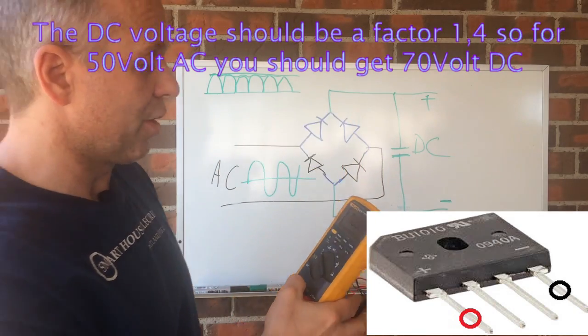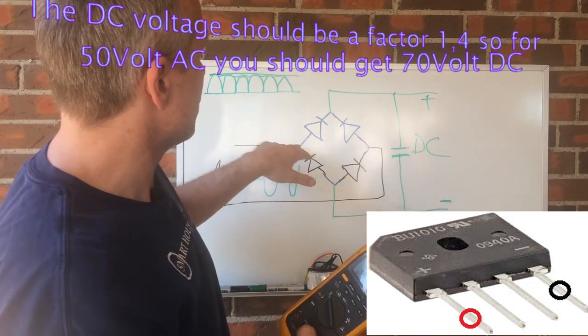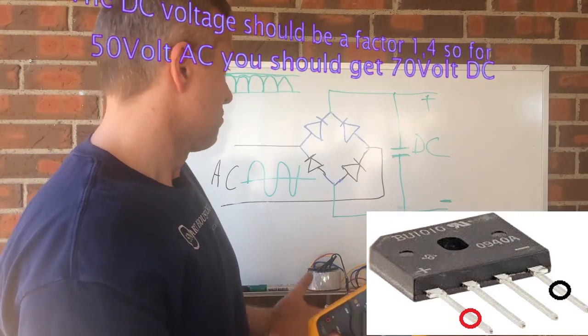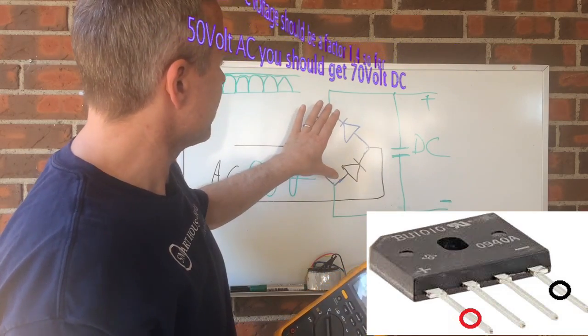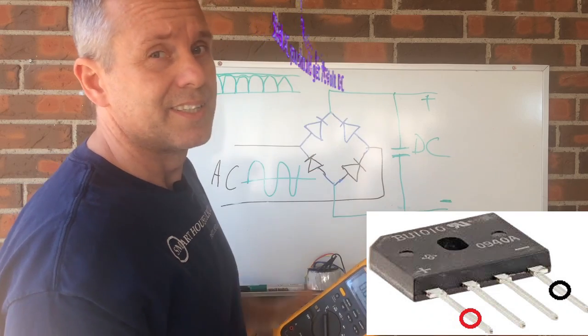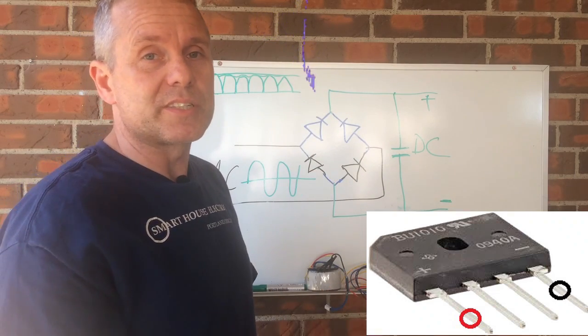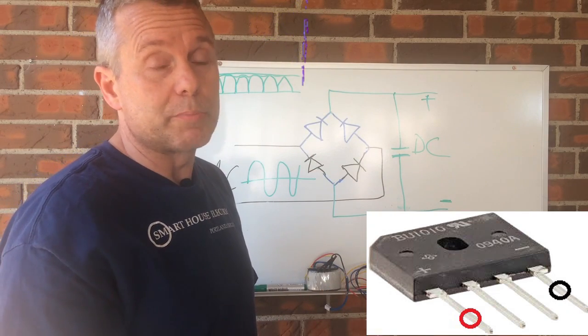So if you had nothing coming out of it. Like if you measured your AC voltage right here and it was fine, it was coming in. And you measure nothing on your plus and minus. Then it's burned off and you will need to replace it.